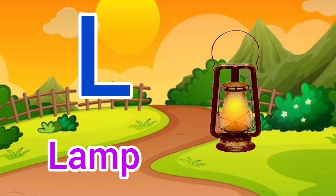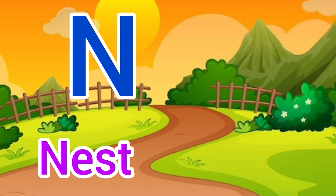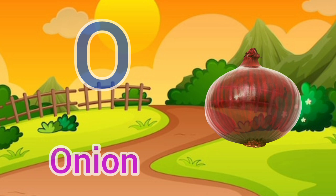M for moon, moon means chaad. N for nest, nest means ghosla. O for onion, onion means piyaj.